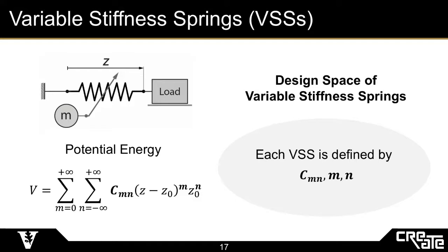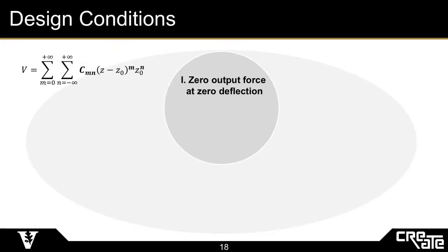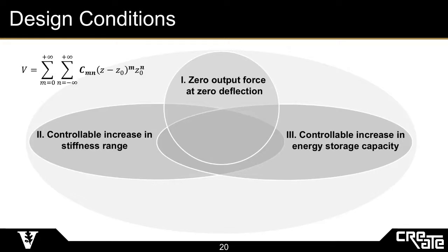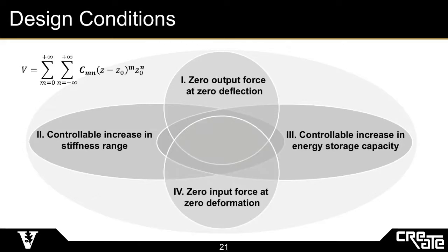To do this, we propose four analytical design conditions for a particular variable stiffness spring. First is a typical spring condition: if the spring is undeflected, the spring outputs zero force. Second, the spring must have a controllable increase in stiffness range, making it a variable stiffness spring. Third, the spring must have a controllable increase in energy storage capacity. And at zero deformation, there should be zero input force — in other words, the spring must not act against the stiffness modulator when changing the stiffness at zero deflection, ensuring that changing the stiffness requires negligible work. From these conditions, we could find the values of C, M, and N that satisfy the intersection of these conditions.